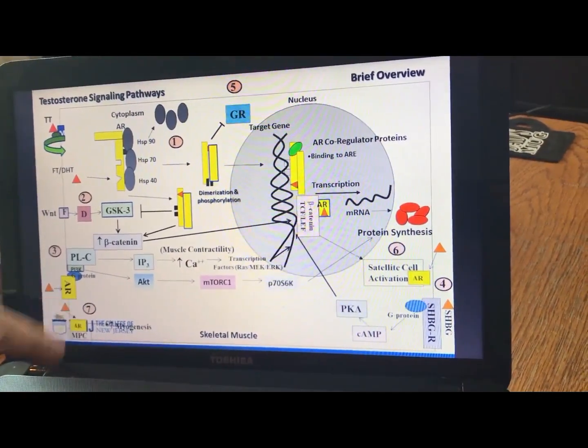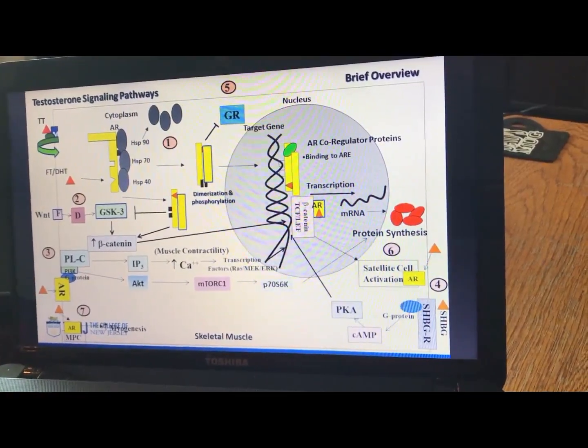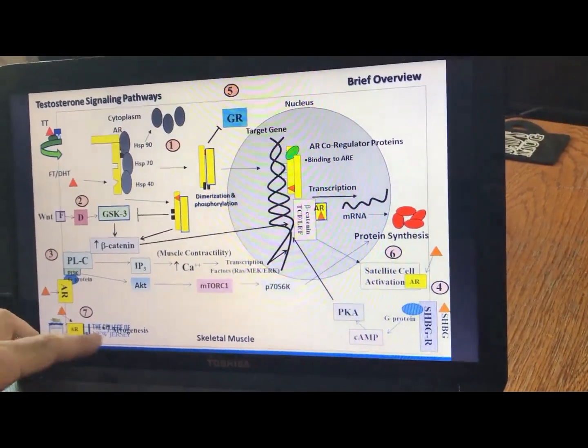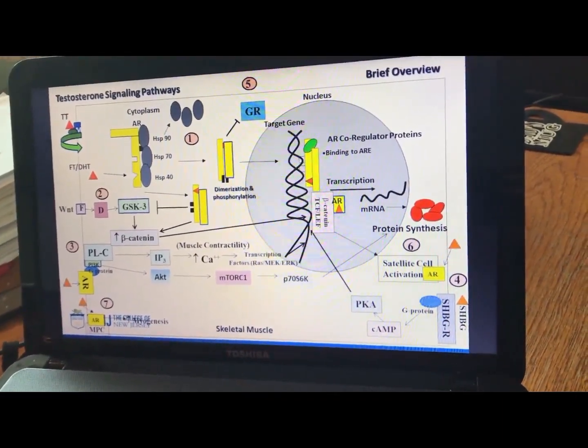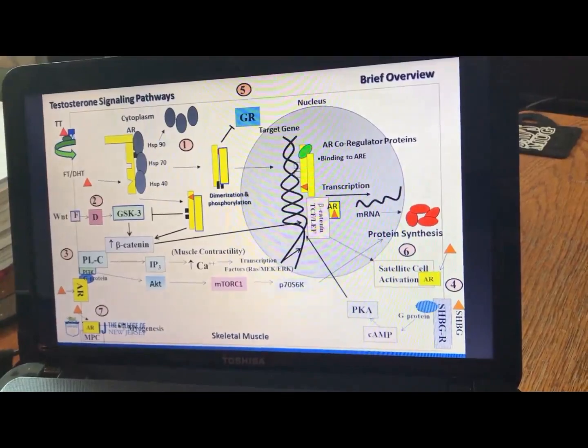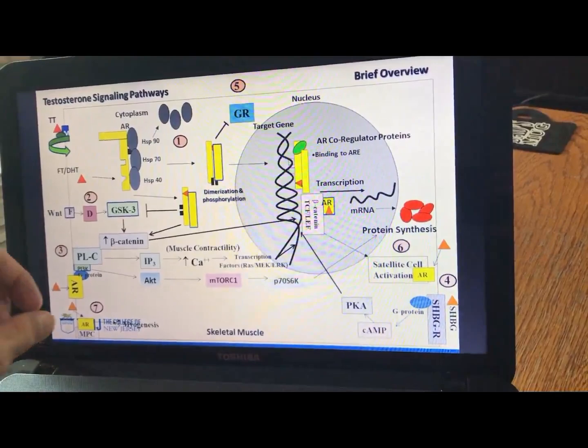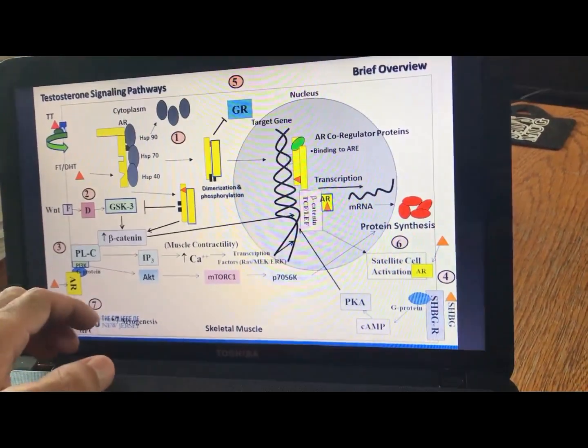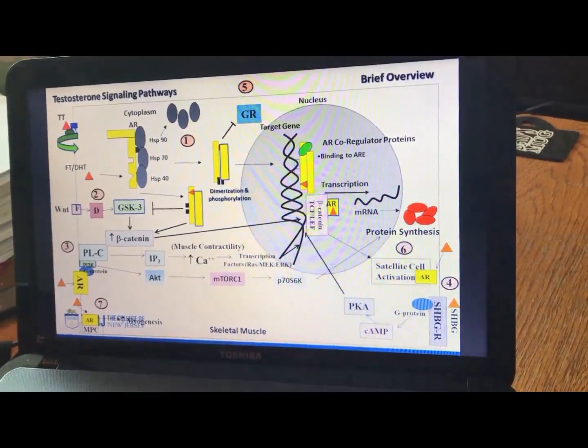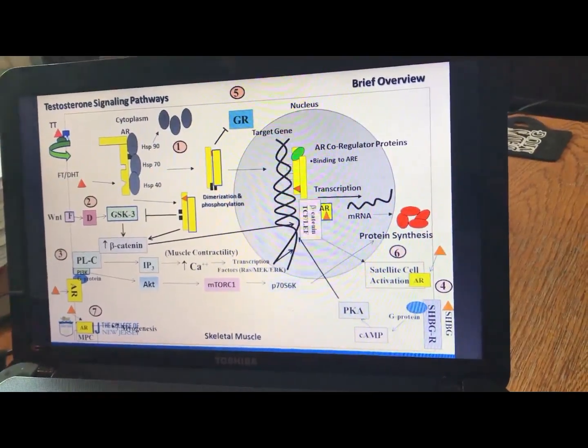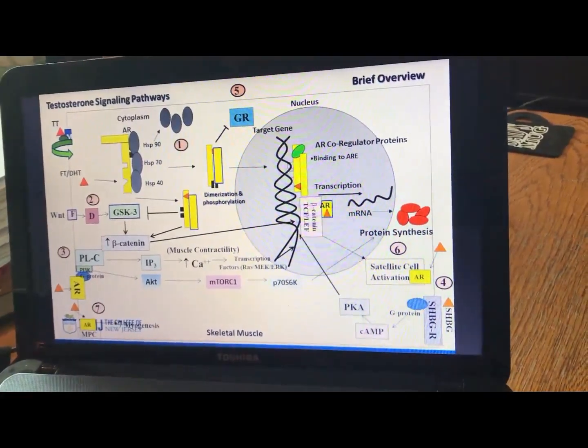But over here as well, higher order stem cells have androgen receptors. And when testosterone binds to those, that has been shown to actually drive the cell cycle more towards myogenesis instead of adipogenesis. So, this pathway, again, in this state, these stem cells could become fat cells over time, adipogenesis, right? When testosterone binds, they're more likely to become muscle, to impact skeletal muscle via myogenesis.